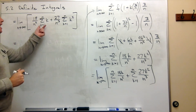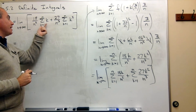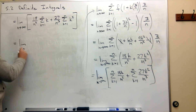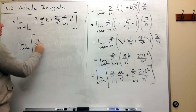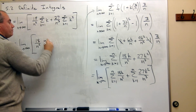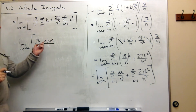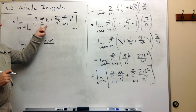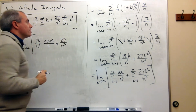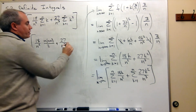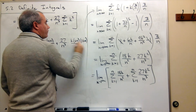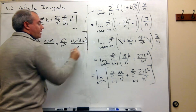Now we need a little bit of knowledge about our sums of the first n integers and the sum of the first n squares. We get the limit as n goes to infinity of 18 over n squared times n times n plus 1 over 2 — which is the sum of the first n integers — plus 27 over n cubed times n times n plus 1 times 2n plus 1 over 6, which is the sum of the first n squares.